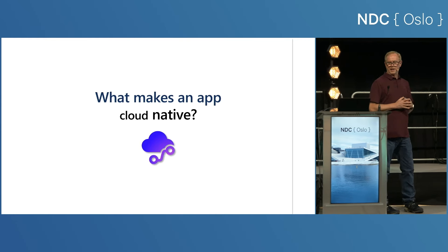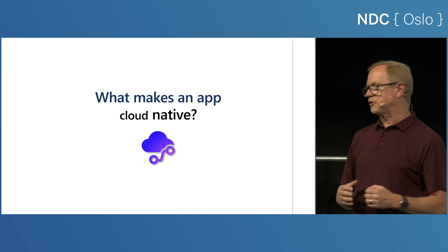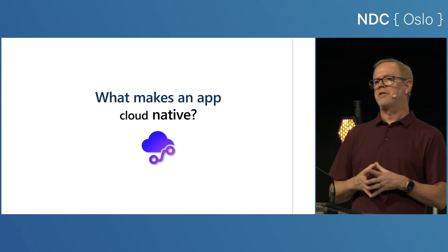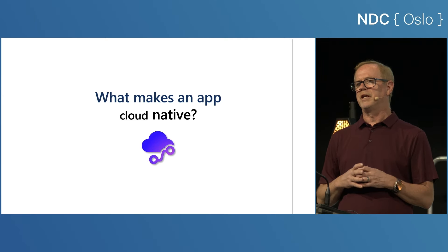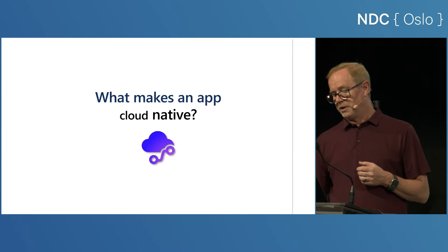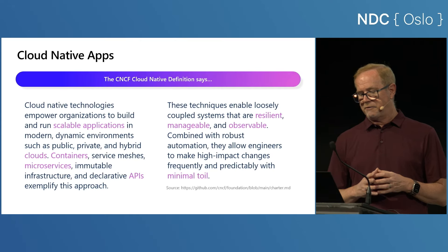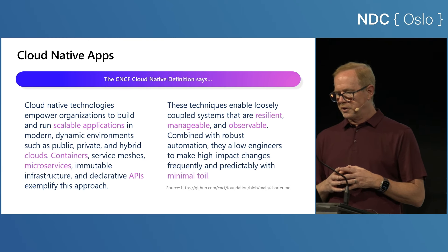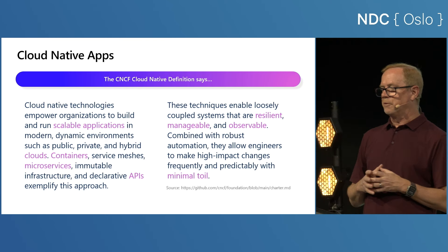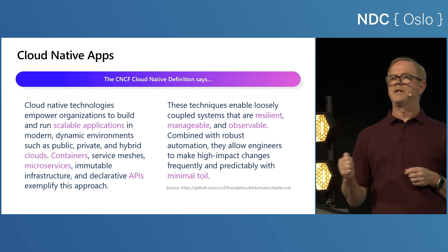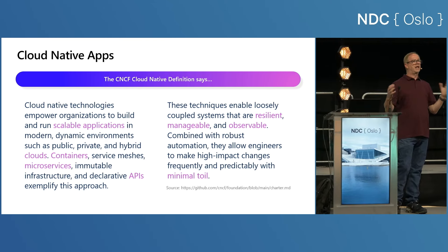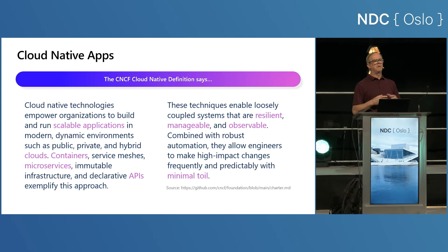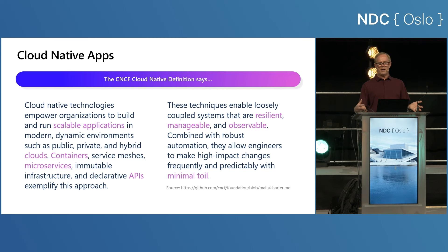I hate all these words like cloud-native. I was just talking to some folks yesterday and they're like, what does cloud-native mean? It means something different to everybody. The big thing we think about when you hear cloud-native is it means your app is ready for the cloud. The CNCF has this huge definition of what cloud-native means with too many words, but there are a couple of things in here that I think are important. Resilient means your application can handle when the cloud wobbles a little bit. Observable means you have great ability to look at the telemetry your application is producing.